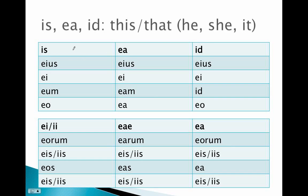And it too follows a very similar pattern to hic, haec, hoc and ille, illa, illud. And that is, in the genitive, eius, you've got your -ius genitive ending. So is, ea, id becomes eius, eius, eius. So your stem is e, and your ending is -ius.